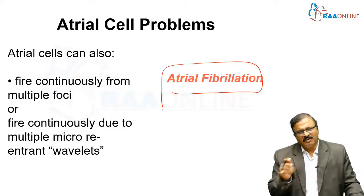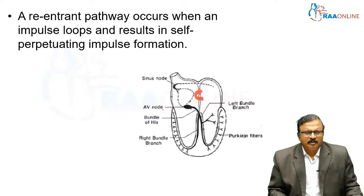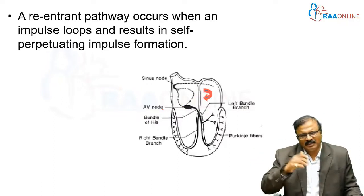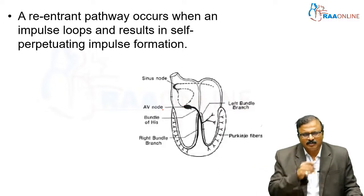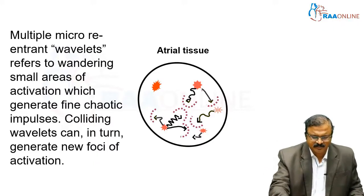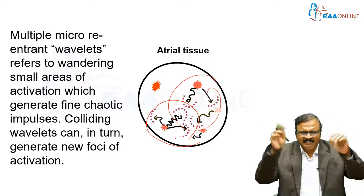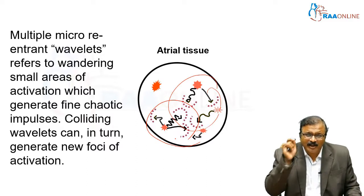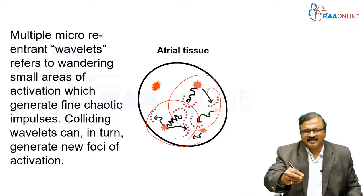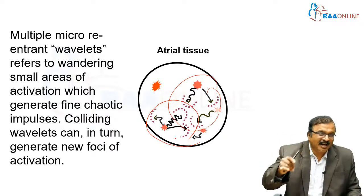Atrial fibrillation is a must-know ECG. This involves re-entrant pathways from the SA node, AV node, or atrium. Multiple micro re-entrant wavelengths create wandering small areas of activation which generate fine chaotic impulses. The colliding wavelengths can in turn generate new foci of activation — that is what produces atrial fibrillation.